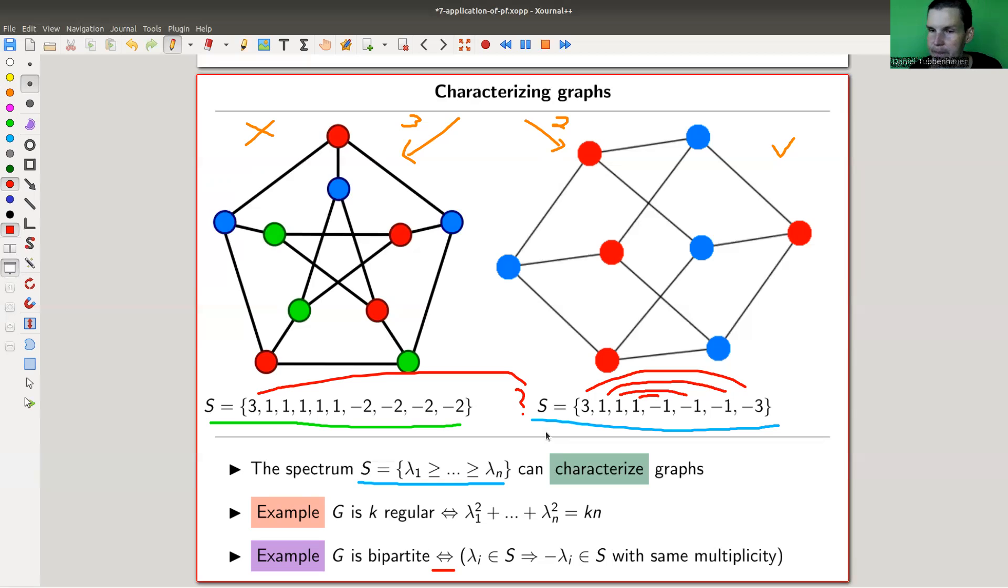And the other one is another characterization. As I said, you have plenty of those. K regular means every vertex has the same number of adjacent edges. So here K is three. You can convince yourself that every vertex has three adjacent edges. Here again, K is three.